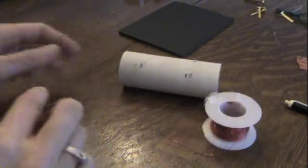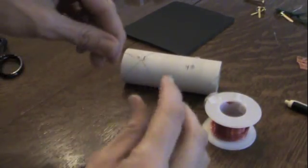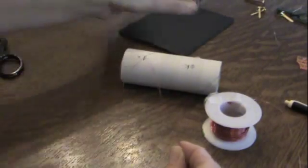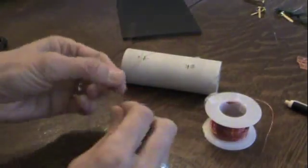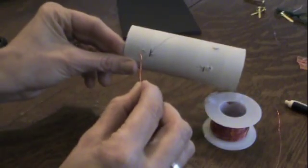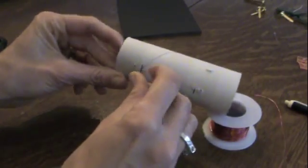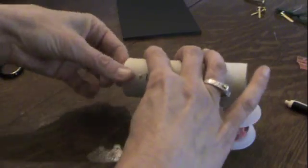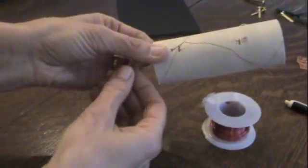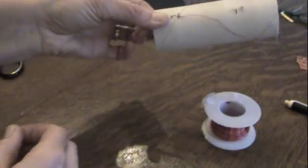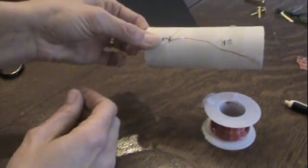I'm going to start winding my coil now. Taking the free end of the magnet wire, I'm going to poke it through the hole I made with my screw, pull it out, and leave about six inches free.